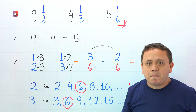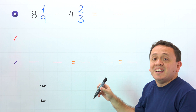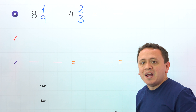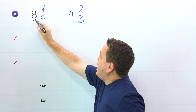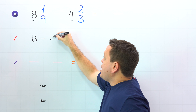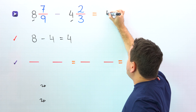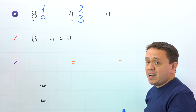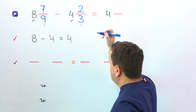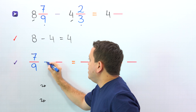Let's continue with another example. In this problem, we're going to subtract 8 and 7 ninths minus 4 and 2 thirds. These two mixed numbers have different denominators. To find the difference, first we subtract the whole numbers — 8 and 4. So we put 8 minus 4, and 8 minus 4 gives us 4. Next, we can put 4 in the answer. We have the difference of the whole numbers.